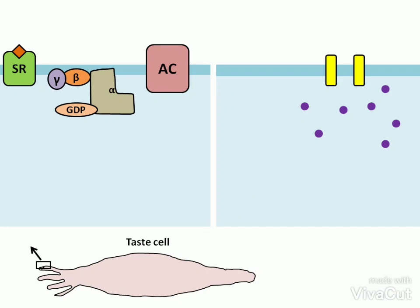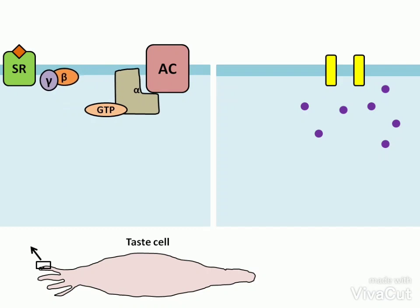This binding causes the GDP-GTP exchange on a G protein called gustucin. This exchange causes the dissociation of the G protein into alpha and beta-gamma subunits.